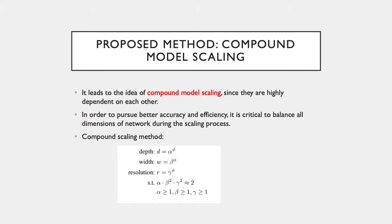There's a parameter phi. It is a user-specified coefficient that controls how many resources are available for model scaling, while alpha, beta, and gamma specify how to assign these extra or additional resources to the network width, depth, and resolution respectively.